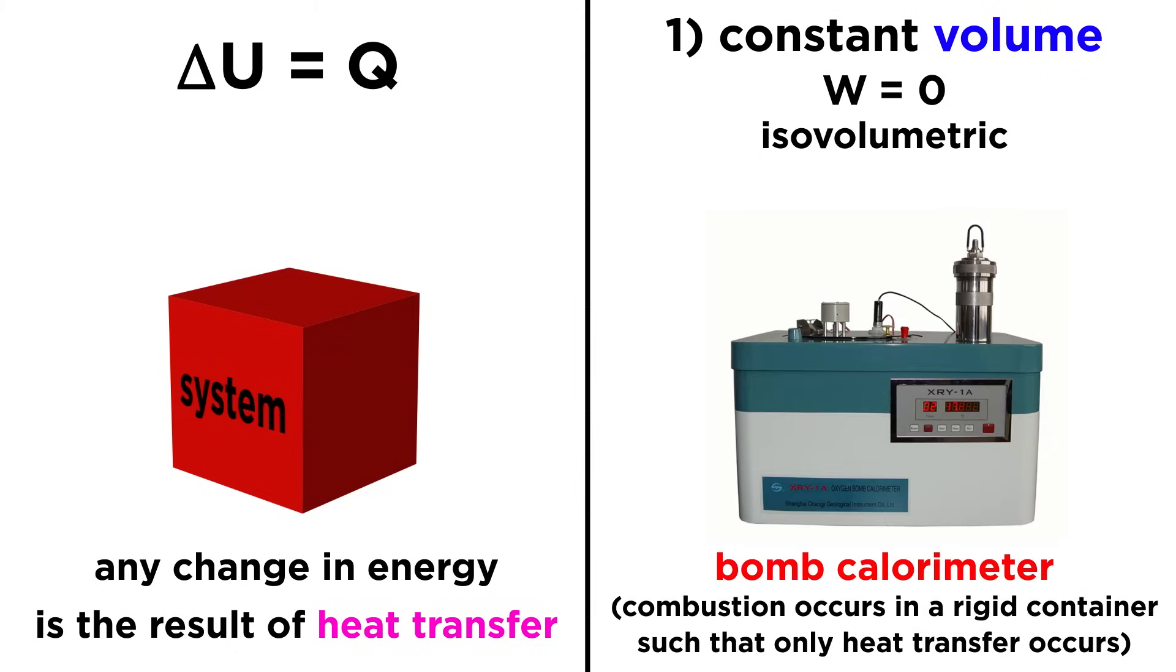An example would be a bomb calorimeter, where a combustion reaction produces a change in temperature, but the rigid walls result in no change in volume.